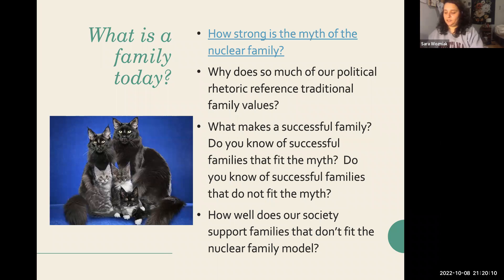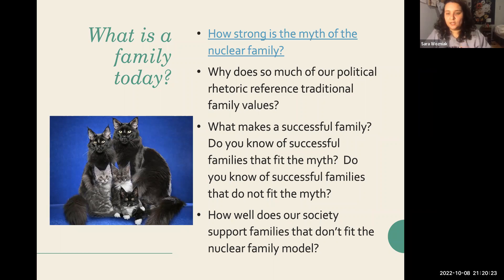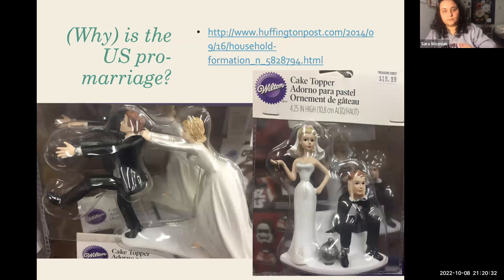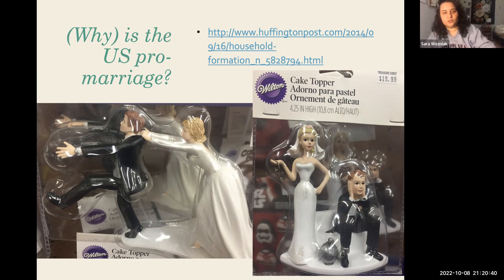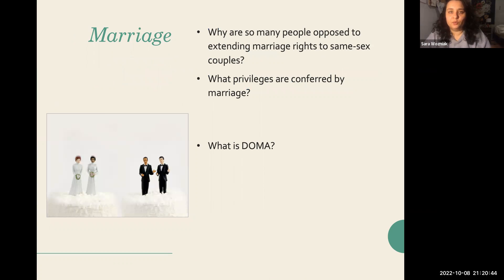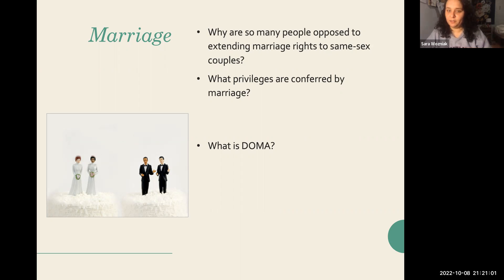What is the family today? Why does so much of our political rhetoric reference 'traditional family values,' and what makes a successful family? How well does our society support families that don't fit the nuclear family model? Why is the U.S. so pro-marriage, and why are so many people opposed to extending marriage to same-sex couples? What privileges are conferred by marriage? Isn't it interesting that heterosexual people feel pressured to get married while queer people often are not allowed to?